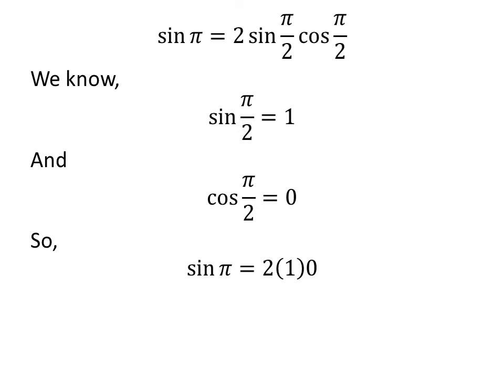Let us replace the value of sine of half of pi and cosine of half of pi in the above expression. So, we get sine of pi is equal to 2 times 1 times 0.